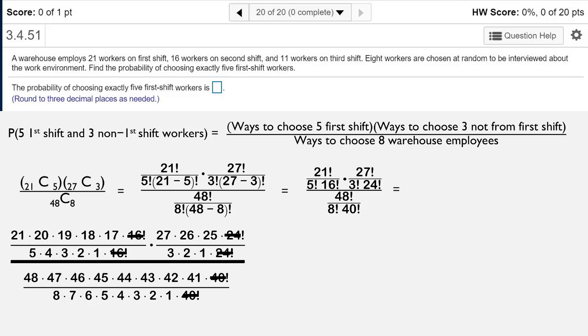But then there's more reduction that can take place. So in the first fraction in the numerator, the 5 and the 4 make 20 and those reduce away. The 1, 2, and 3 make 6 which reduce with the 18 to leave a 3. In the second fraction of the numerator, we have the 3 and the 27 reduce to leave a 9, and the 2 and the 26 reduce to leave a 13.